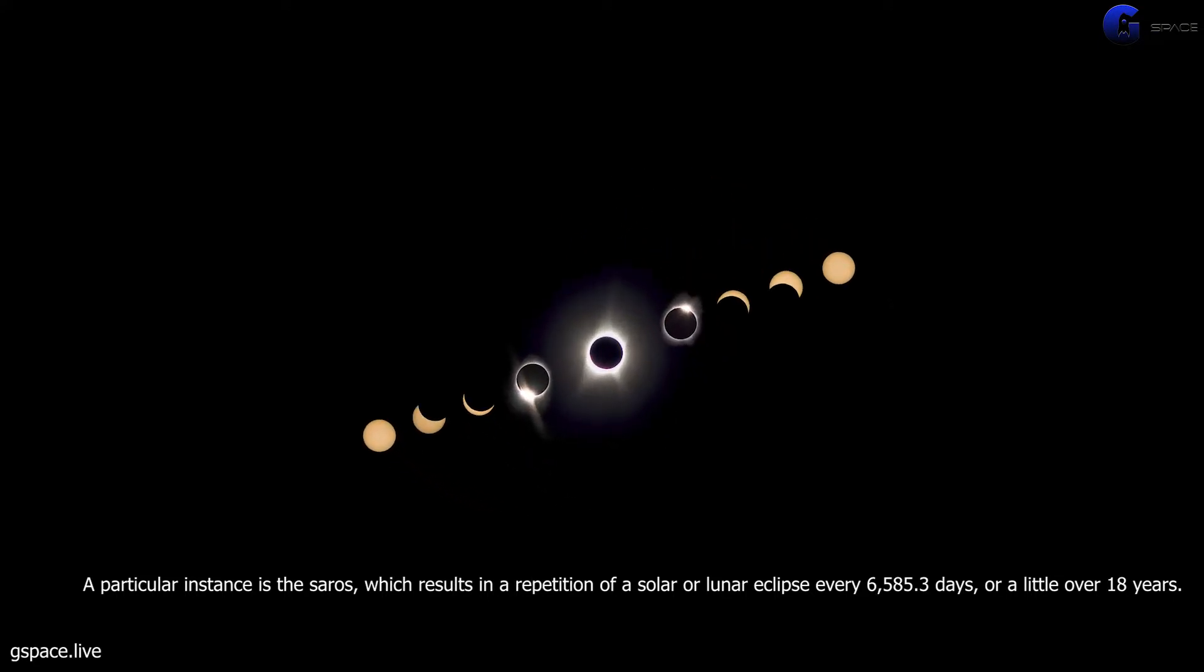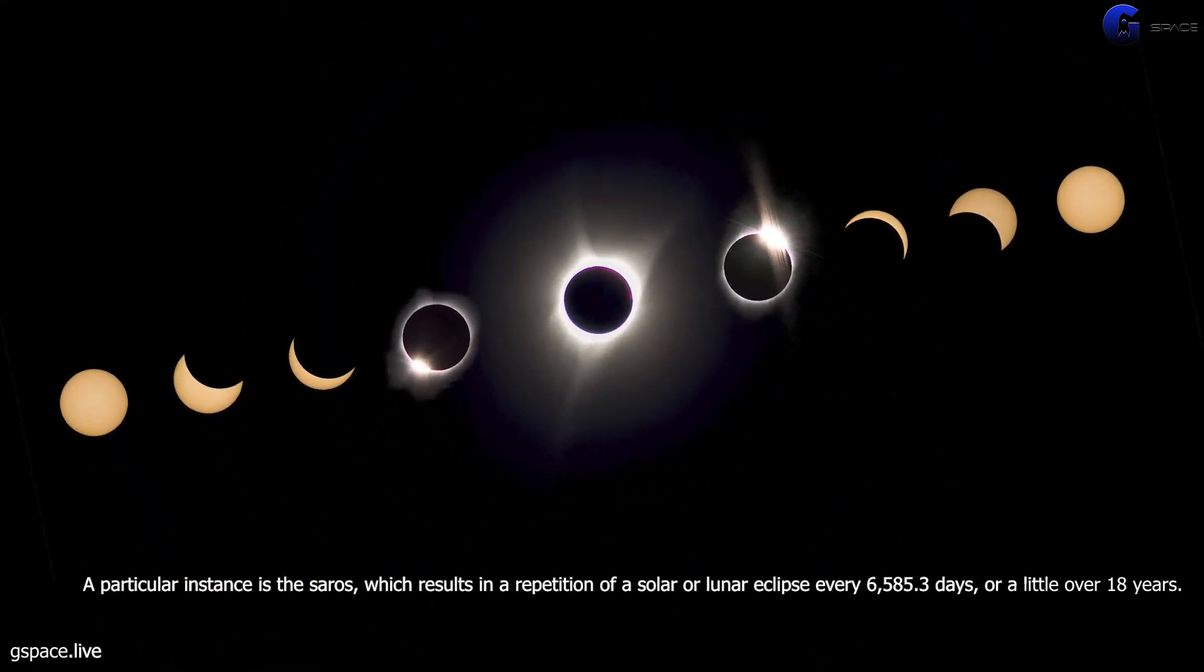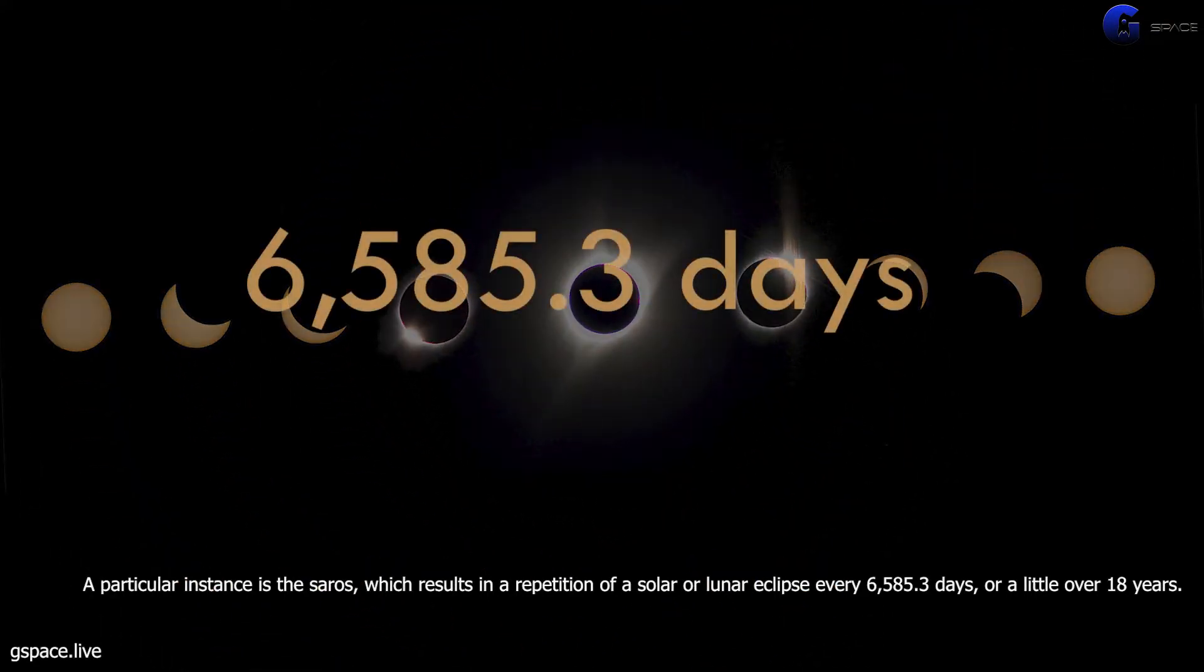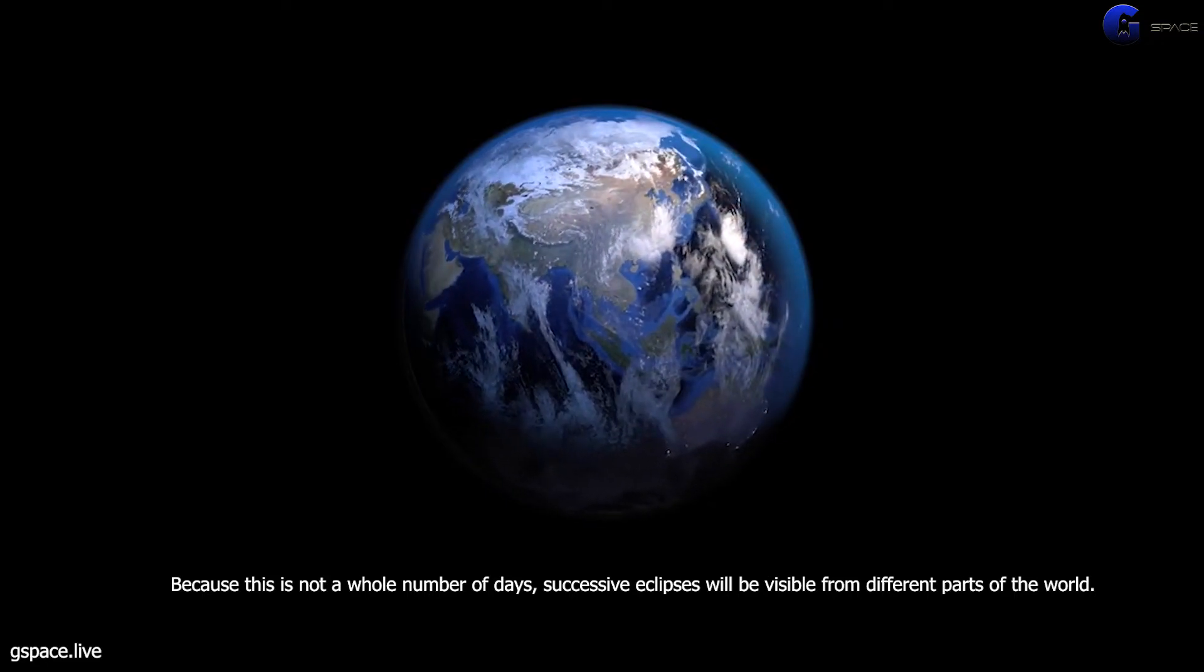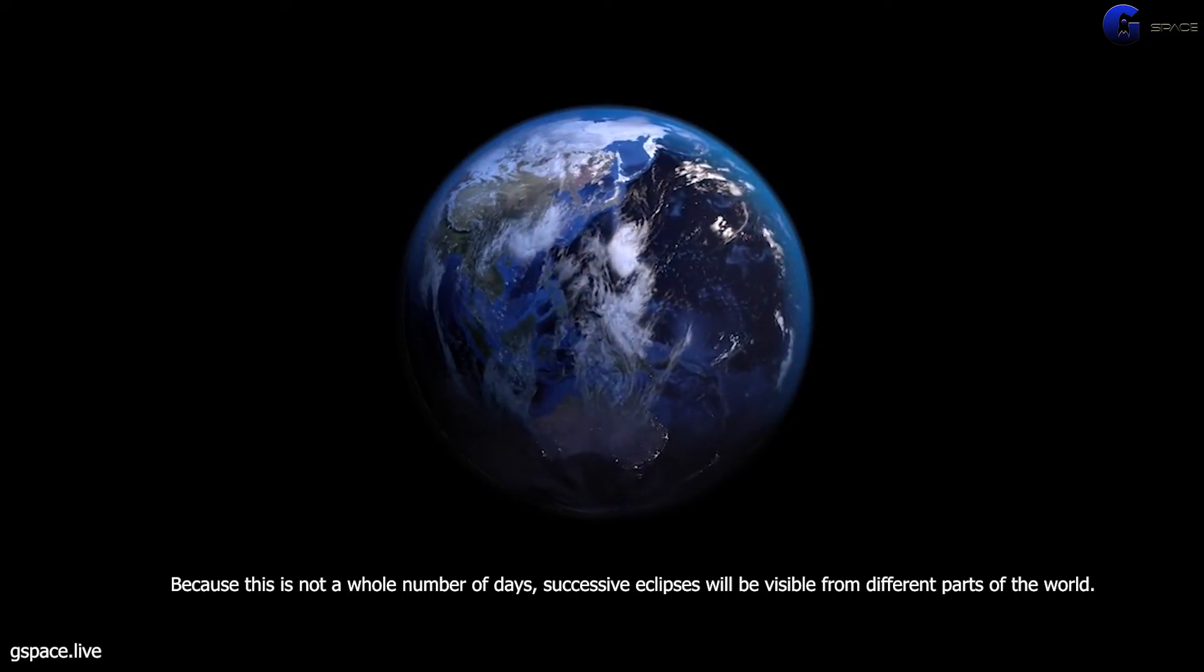A particular instance is the saros, which results in a repetition of a solar or lunar eclipse every 6585.3 days, or a little over 18 years. Because this is not a whole number of days, successive eclipses will be visible from different parts of the world.